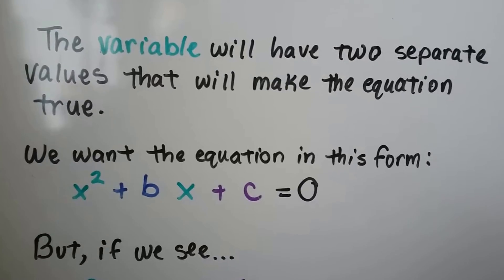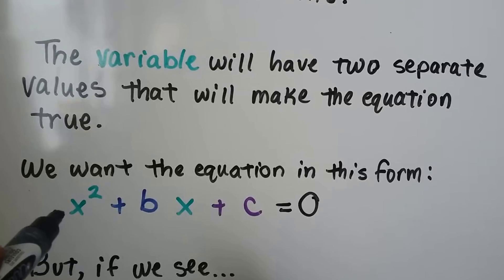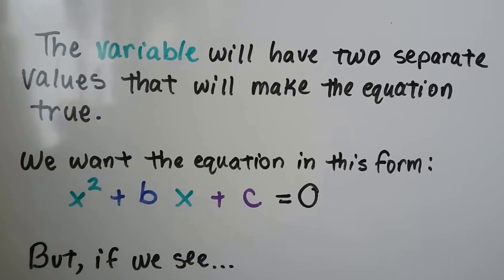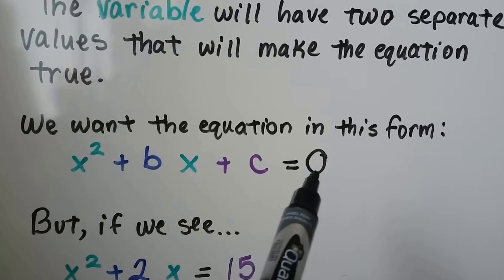We want the equation to be in this form. There might even be an a here, and that represents a coefficient for each of the variables. The a, the b, and the c would actually be numbers. I'll show you. But we want it to be in this form where it's equal to zero.